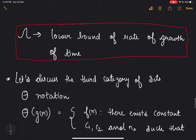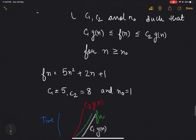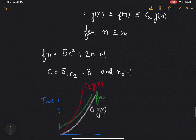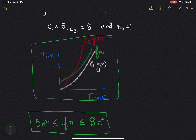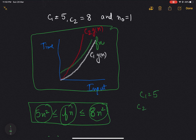Now let's discuss the third category, which is Theta notation. For Theta notation, given f(n), there exist constants c1, c2, and n₀ such that c1·g(n) ≤ f(n) ≤ c2·g(n) for all n ≥ n₀. For f(n) = 5n² + 2n + 1, we find c1 = 5, c2 = 8, and n₀ = 1. Plotting the graph, f(n) is less than 8n² and greater than 5n².